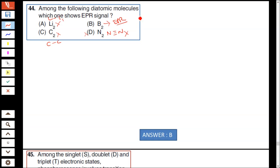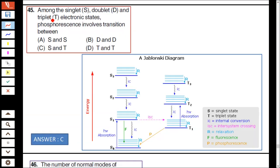Question number 45: Among the singlet, doublet, and triplet electronic states, phosphorescence involves transition between? Here in the Jablonski diagram, observe the electron moves towards higher energy level or returns to ground state. Internal conversion occurs, and fluorescence corresponds to the transition.